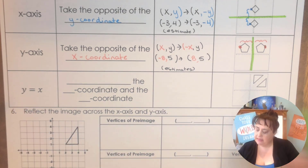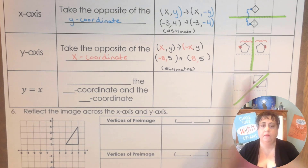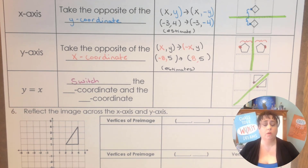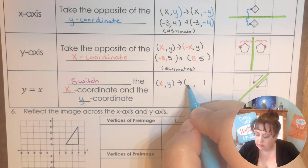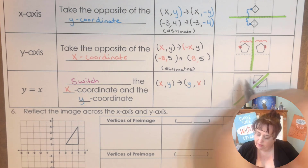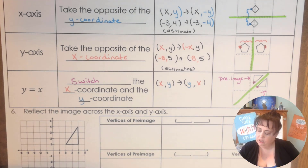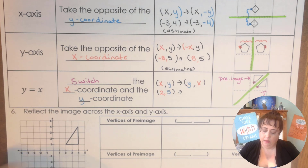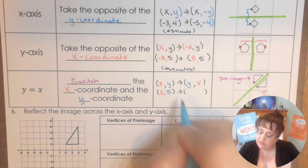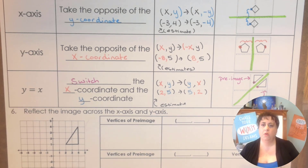For Y equals X, that's the diagonal axis, and on this one both coordinates change. We're going to switch the X coordinate and the Y coordinate — the Y coordinate goes in the X coordinate's place, and the X coordinate goes in the Y coordinate's place. So if the pre-image has X equal to two and Y equal to five, then the image has X equal to five and Y equal to two — over five and up two. I estimated those first points because I just cannot see what they are.